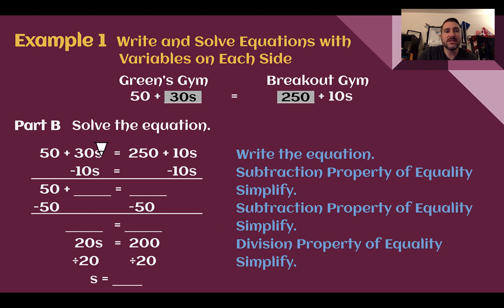We're solving with a variable on both sides, so I'm going to subtract 10s from both sides to eliminate it off the right. 30 minus 10 is 20s. Bring down our 250.